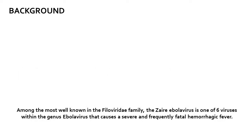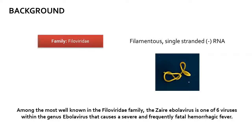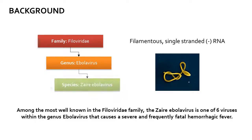The Zaire Ebola virus belongs to the family Filoviridae, which are filamentous viruses that contain a negative sense single-stranded RNA genome. The family is further subdivided into the genus Ebola virus and the species Zaire Ebola virus, which is one of six viruses within the genus that causes one of the most severe and frequently fatal hemorrhagic fevers.